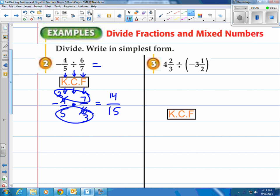Now don't forget we had a negative fraction times a positive fraction so the answer is going to be negative. So I have -14/15. There's the final answer.